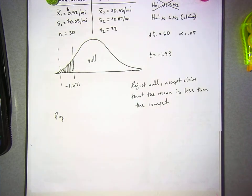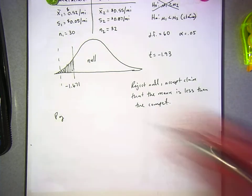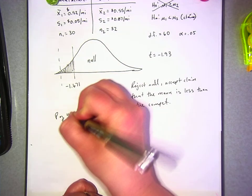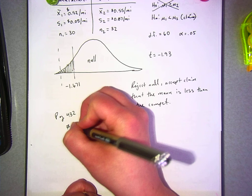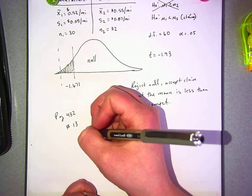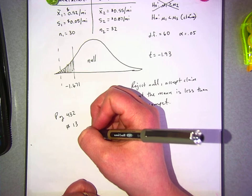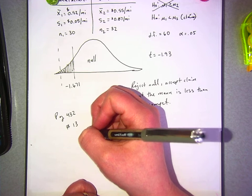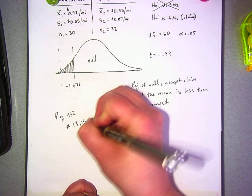Page, let's see, means are the same, variances are not equal, not equal, are equal. Let's do page 432, numbers 13, 15, and 19.